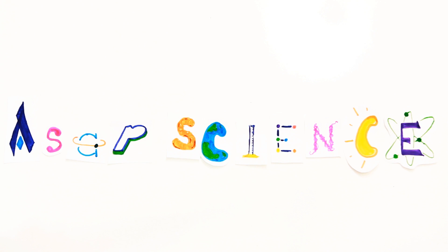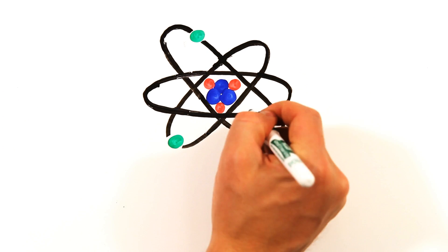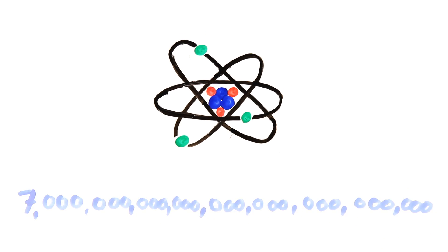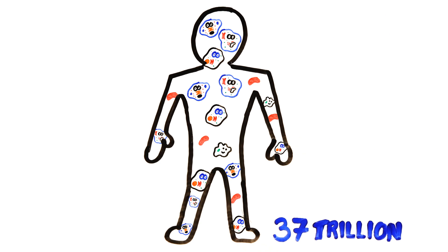Your body is made up of many atoms, around 7 octillion to be exact. These make up the 37 trillion cells in your body, which are actually much younger than you think.